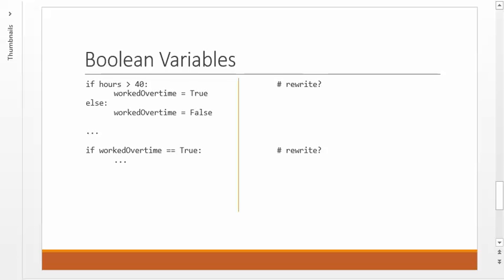Last but not least, there are variables that you specifically design to contain only the values true or false, and those are called Boolean variables. And you'll notice that when you assign them to true or false, you use a capital T and a capital F. Those are the keywords true and false. Now, in this example, we can say if hours worked is greater than 40, then we set this variable called workedOvertime to true. Otherwise, set workedOvertime to false.